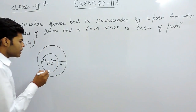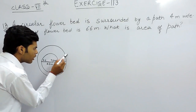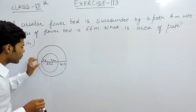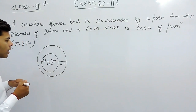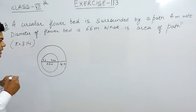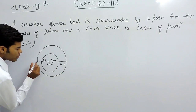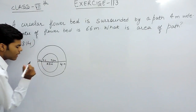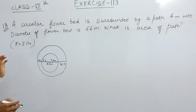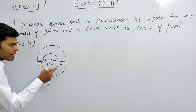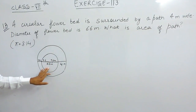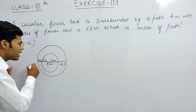First of all, we will find the area of the bigger circle, and then we will find the area of the smaller circle. The bigger circle's diameter will be equal to 4 plus 66 plus 4 meters. We will find the radius from that and then calculate the area of the bigger circle.